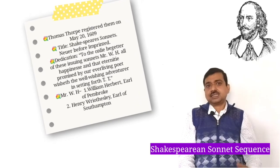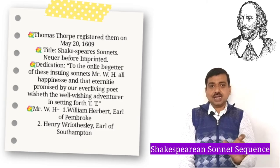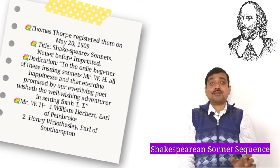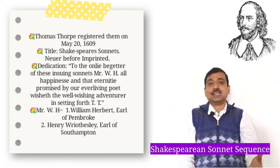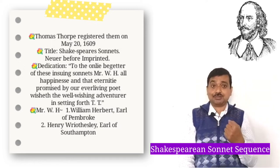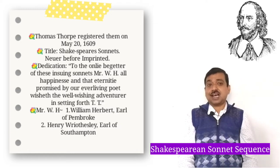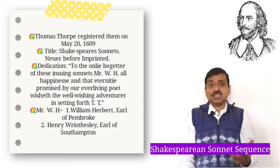Thomas Thorpe registered the sonnets of William Shakespeare on May 20th, 1609, with the title 'Shakespeare's Sonnets, Never Before Imprinted.' He prefixed the volume with a cryptic dedication: 'To the only begetter of these ensuing sonnets, Mr. W.H., all happiness and that eternity promised by our ever-living poet.' Many attempts have been made to determine the identity of W.H. The two leading candidates are William Herbert, Earl of Pembroke, and Henry Wriothesley, Earl of Southampton.